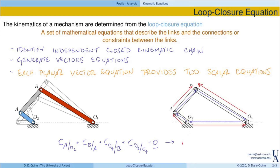It's the same vector equation, just organized slightly differently. So we might have A with respect to O2 plus B with respect to O2, equals O4 with respect to O2, plus B with respect to O4. Really, both sides of this vector equation describe the position of B. On the left side we're moving through point A, and that constraint pins these two links together. On the right side we're moving through O4, and the constraint pins link four to the ground. They're identical. Notice that when I move this vector over to the right-hand side, it becomes the position of O4 with respect to O2.